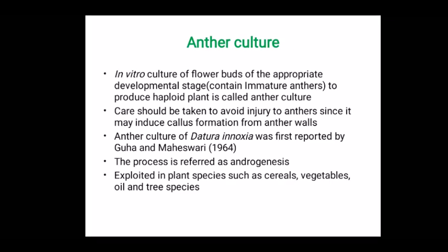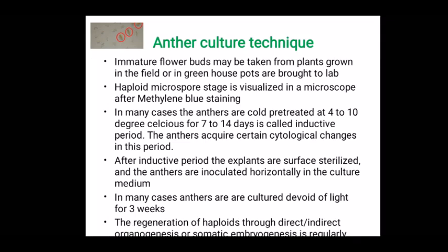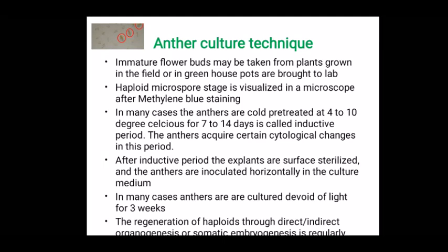This is exploited in plant species such as several cereal crops, vegetables, oilseeds, and also tree species. For the techniques followed in anther culture: first, immature flower buds are taken from plants grown in the field or in the greenhouse. The microspore stage — that means haploid stage — of the pollen grains is confirmed by visualizing under a microscope after staining the pollen grains with methylene blue. In many cases the anthers are cold pre-treated, kept in 4 to 10 degrees Celsius.